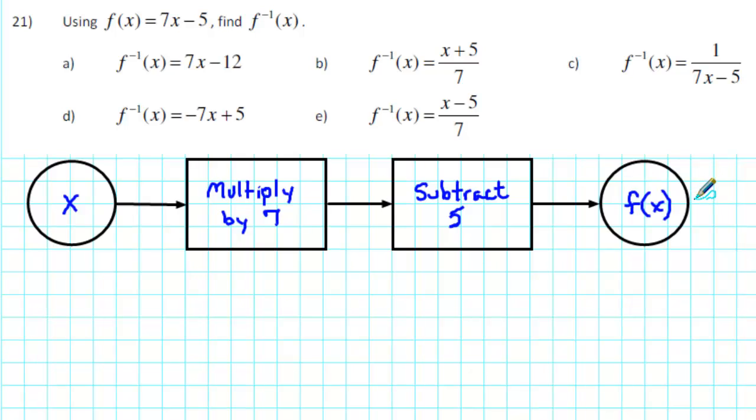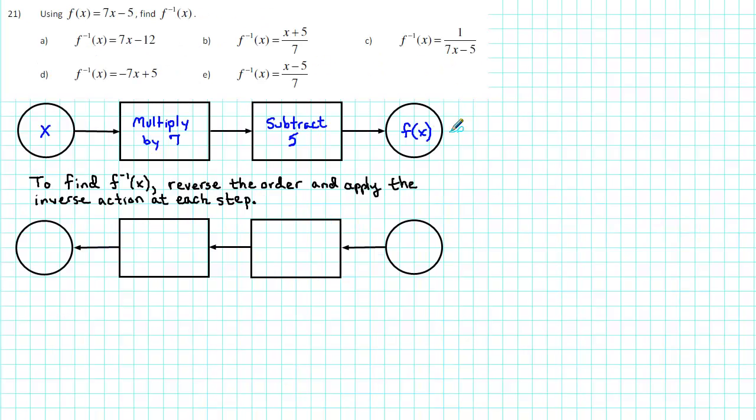To find the inverse function, we need to reverse the order and apply the inverse action in each step. We need to reverse the order, so we'll go ahead and put our input x at the end, and then work our way backwards, remembering to apply the inverse action in each step.